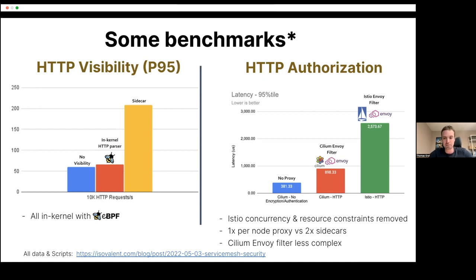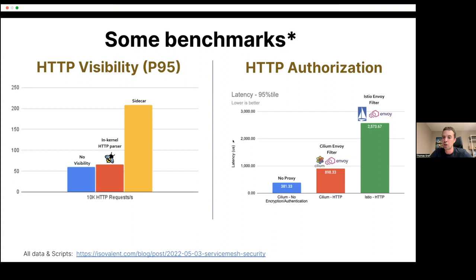What if we actually need a proxy? Blue is no proxy at all, and in red and green we're doing a simple HTTP authorization policy — just an HTTP header check. This shows a significant difference between Cilium operating Envoy and Istio operating Envoy. Reason one: Cilium runs only one proxy instead of two. Reason two: the Envoy filter that Cilium uses is radically simpler than the Istio one. This is actually a relatively optimized Istio configuration — using the default 1D CPU limitation of Istio, the numbers are much, much worse.